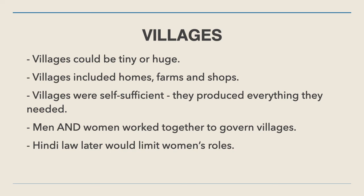Villagers were typically self-sufficient, which means they made everything that the people in the village would need. They did trade certain things depending on their specialties, but generally all the food the village needed was grown by the people in that village on their own farms.